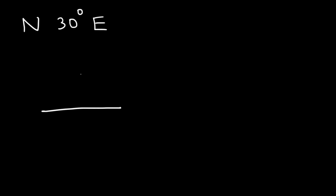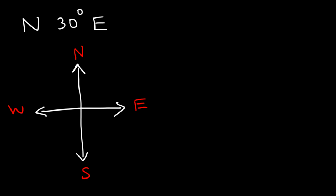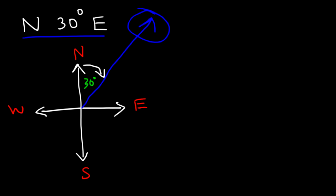So first, let's write the directions: north, south, east, west. A bearing is an acute angle that's measured relative to the north-south line, so you should always start with this line. Starting with the line facing north, we need to travel 30 degrees towards the east. Drawing a line from the origin to that point gives us the bearing — this line represents where the object is going.